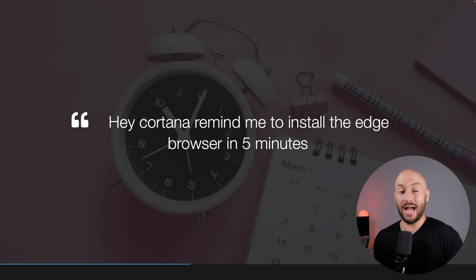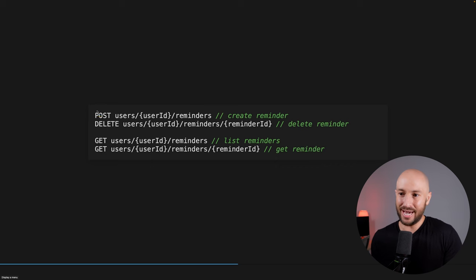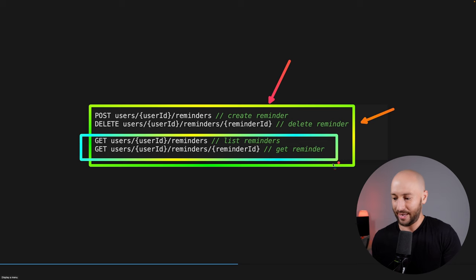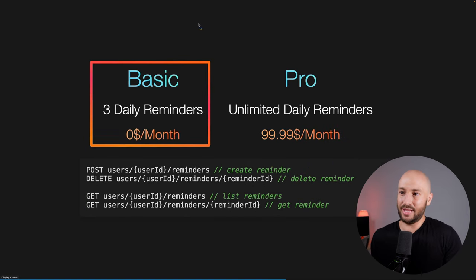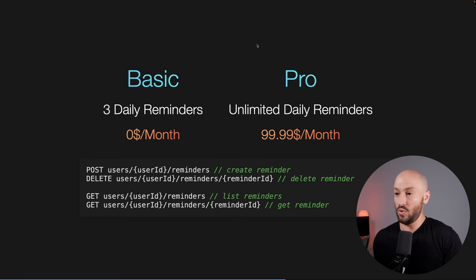Let's imagine that we have an application for setting reminders. We can imagine an API with options to create reminders, delete reminders, and fetch reminders. To make it a bit more interesting, let's say that in the basic plan, you can set up to three daily reminders. And if you want more than that, you can purchase a subscription that will give you unlimited daily reminders.